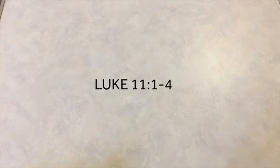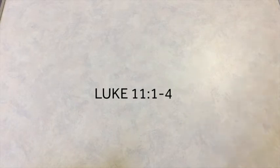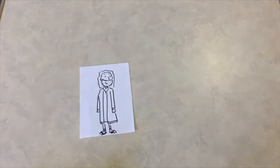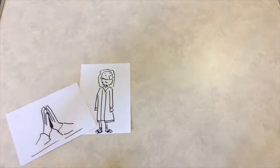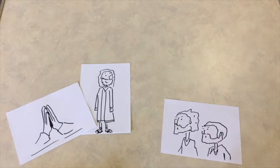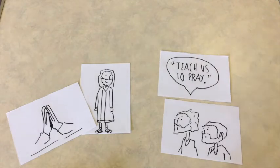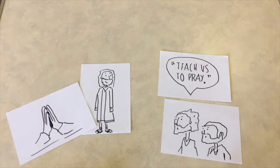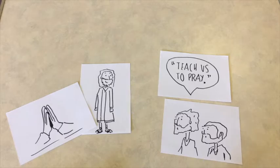Today's Bible story is from Luke 11, verses 1 to 4. One day Jesus was praying in a certain place. When he finished, one of his disciples said to him, 'Lord, teach us to pray, just as John taught his disciples.' He said to them, 'When you pray, say: Father, hallowed be your name. Your kingdom come. Give us each day our daily bread. Forgive us our sins, for we also forgive everyone who sins against us.'